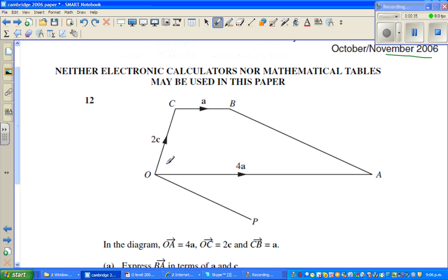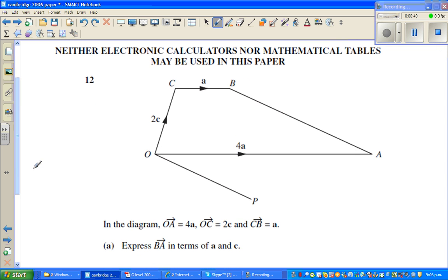The vector OC is 2c, CB is 2a. So the question is express BA in terms of a and c.